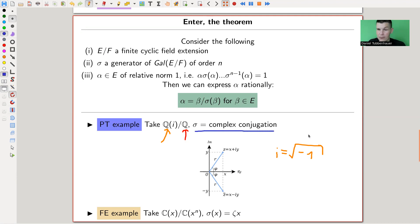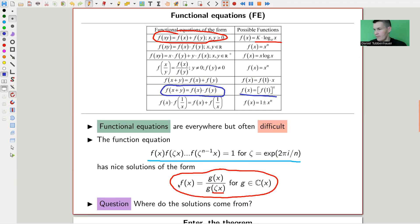And the automorphisms of this field extension, they form a group which is called the Galois group. And let's say you have a generator of that Galois group of order, of a certain order. For example, in this case, complex conjugation is an automorphism that would work here. And this has order two in this case. And let's say you have an element in your field of relative norm one. And this really just means you have alpha, you have sigma of alpha, all the way to sigma to the n minus one alpha equals one. That's just a product that comes out. And then Hilbert's theorem 90 says, okay, if that's the case, then you can express alpha rationally. You have a closed expression for alpha, and it's always of the form something divided by applying sigma to it.